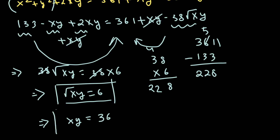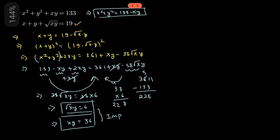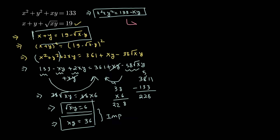These two results are important equations. Substituting xy = 36 into x² + y² = 133 − xy gives x² + y² = 133 − 36 = 97. Substituting √(xy) = 6 into the rearranged second equation gives x + y = 19 − 6 = 13.